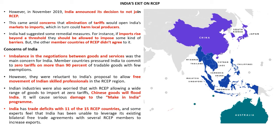Other concerns include an imbalance in negotiations between goods and services, and India's proposal to allow free movement of Indian skilled professionals in the RCEP region was not accepted. Indian industry was also worried that RCEP would allow a wide range of goods to be imported at zero tariff. China, the world's biggest producer of goods at cheap cost, would flood the Indian market, causing damage to the Make in India initiative and Atmanirbhar Bharat. India has a trade deficit with 11 out of the 15 RCEP countries, and experts feel India has been unable to leverage existing bilateral free trade agreements to increase exports.